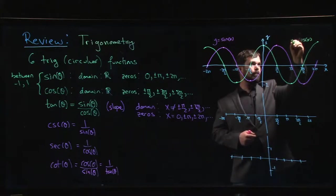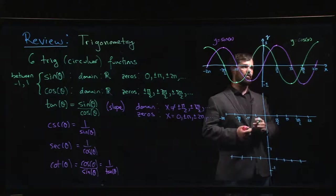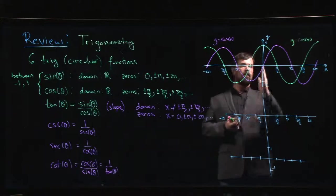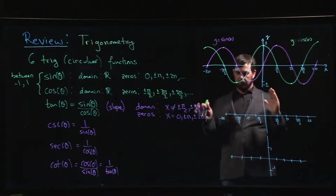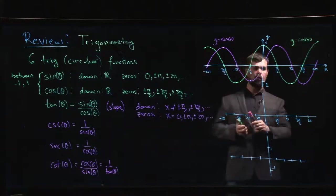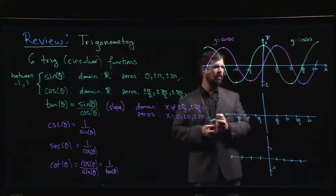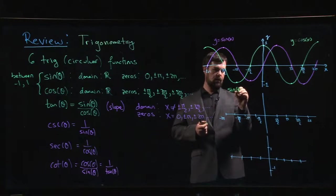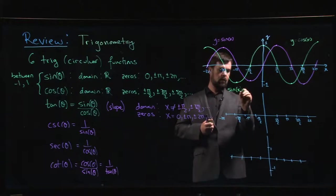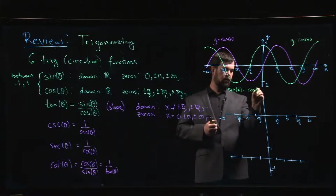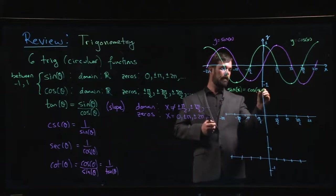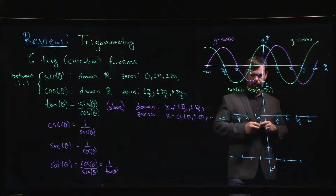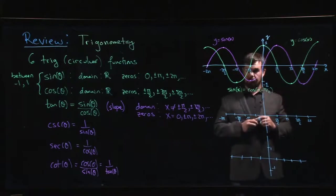In fact, one of the things you might notice is that the graph for cosine is just a translation of the graph for sine. Right? The sine graph is just shifted over by pi over 2. And that's no coincidence. Right? So one of the things that you'll notice is that sine of x is the same thing as cos of x minus pi over 2. Right? So that's one of the things that you might notice.